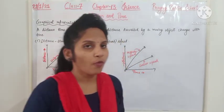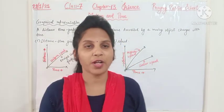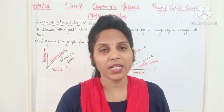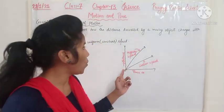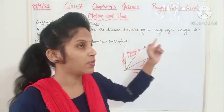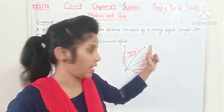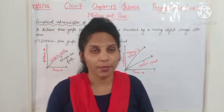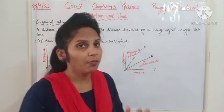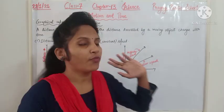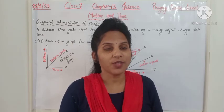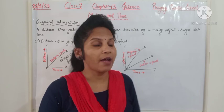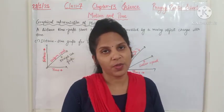The slope of the distance-time graph shows the speed of the object. Here you can see OB has a higher speed — what is its slope? High. And OA has a lower speed — what is its slope? Low. So with the help of slope we can tell whether the object has higher or lower speed: a higher slope means higher speed, and a lower slope means lower speed.